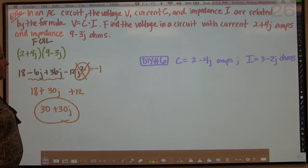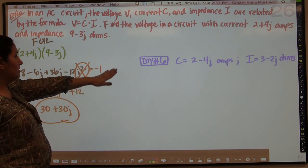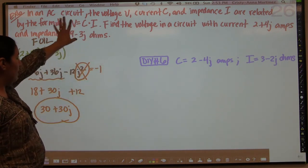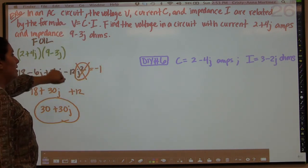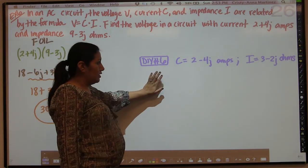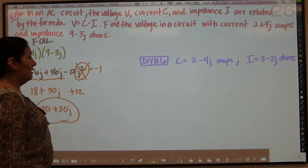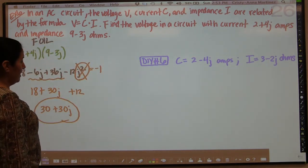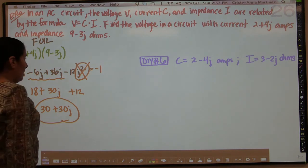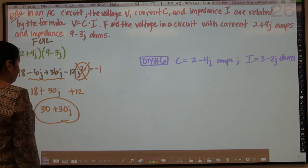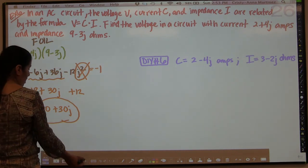So now for do-it-yourself number 6, with the same V equals CI parameters: the current is 2 minus 4j and the impedance is 3 minus 2j. Multiply those to get the answer.